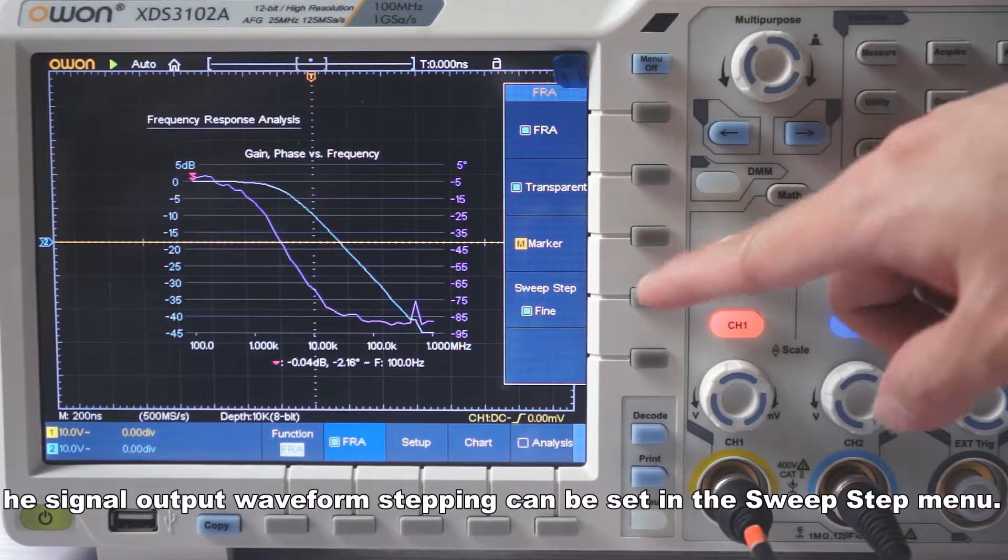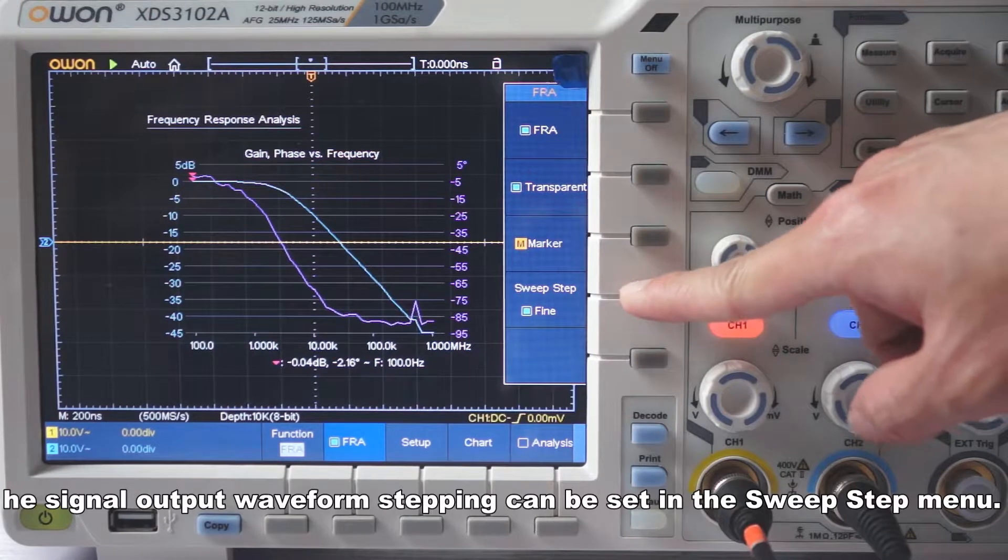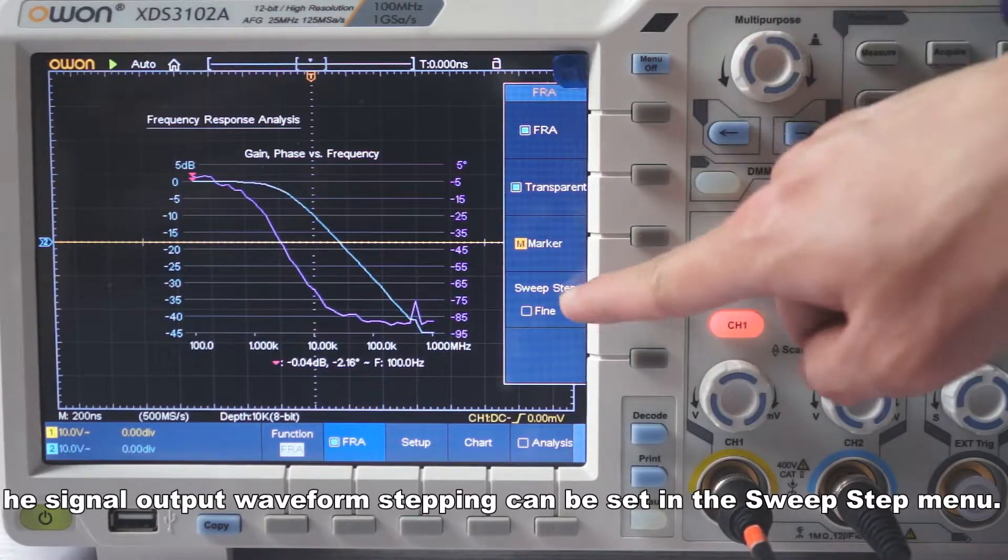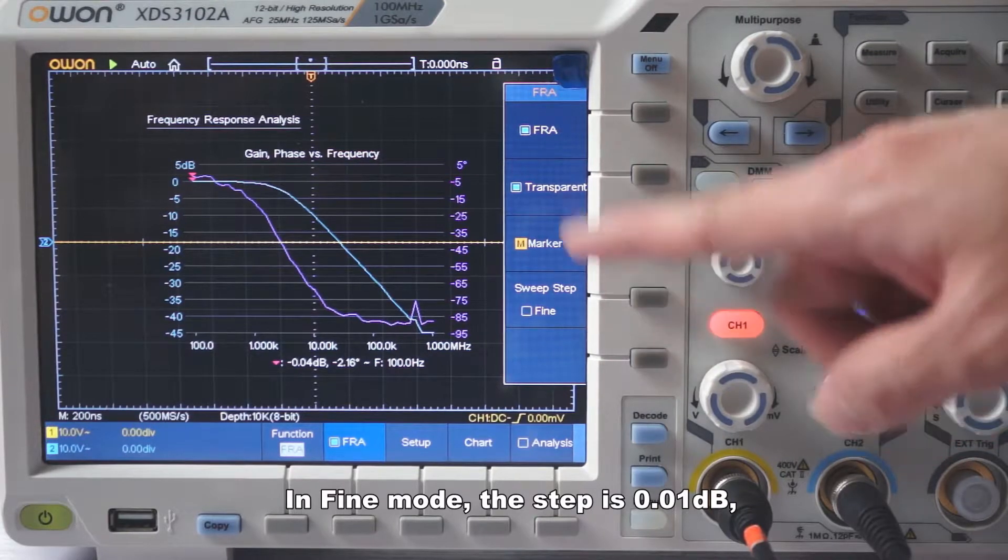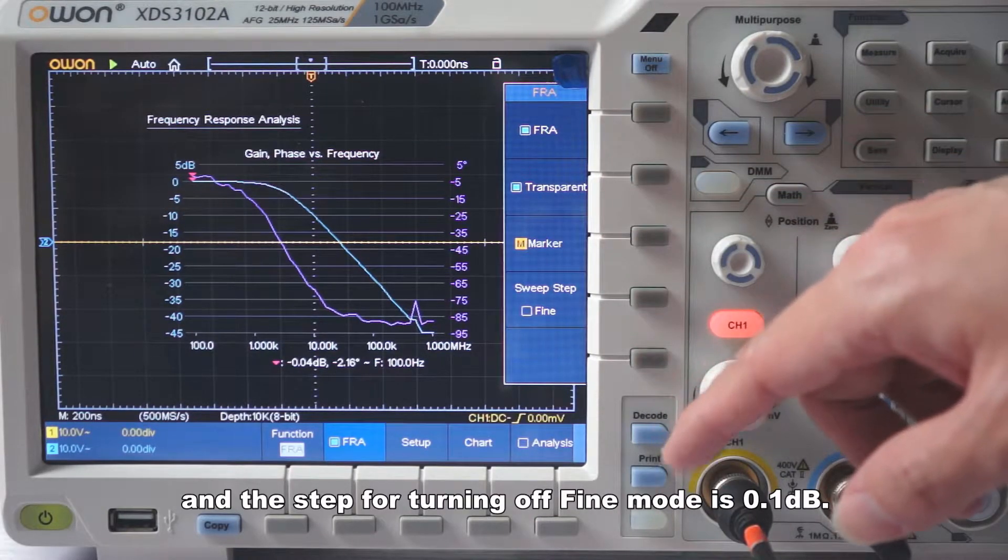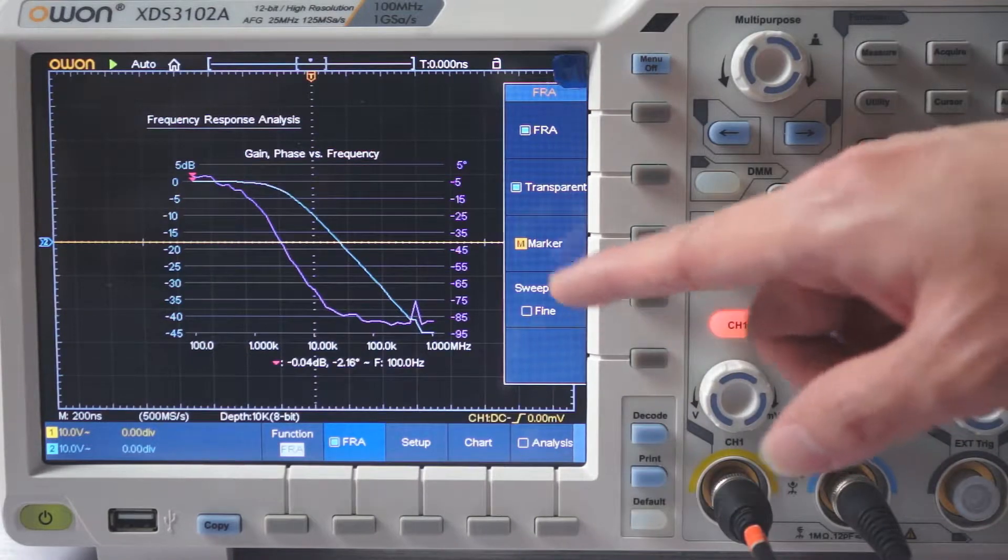The signal output waveform stepping can be set in the sweep step menu. In Find mode, the step is 0.1 dB, and the step for turning off Find mode is 0.1 dB.